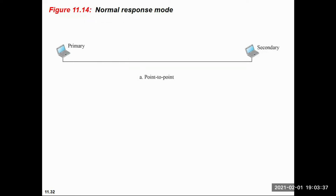The secondary station can then send frames called responses. A combined station can act both as a primary and secondary station. Communication can also be between two logically equal computers, in which case they are designated as combined stations and can receive both command and response frames. In the point-to-point configuration, the primary station sends commands and the secondary station responds.